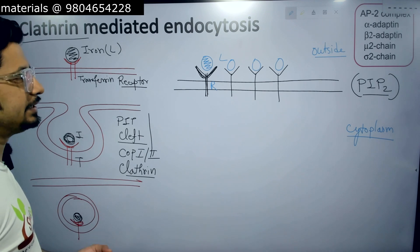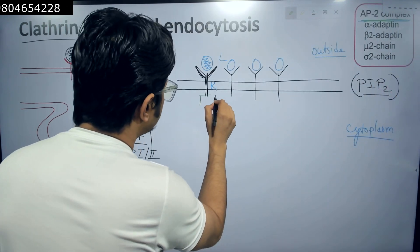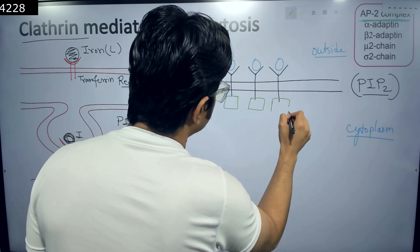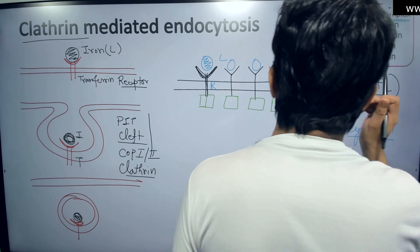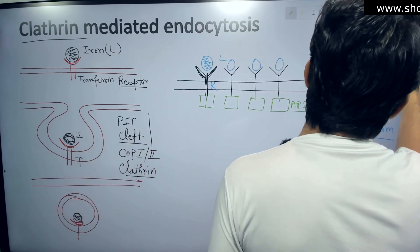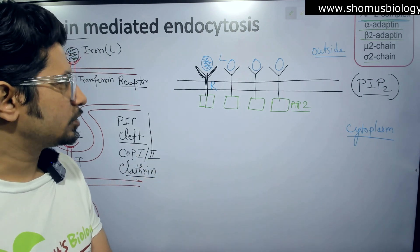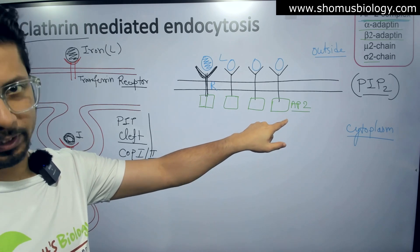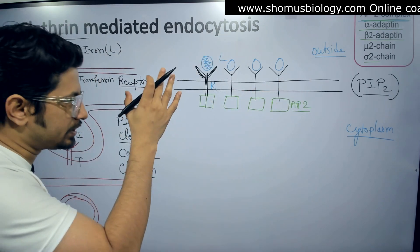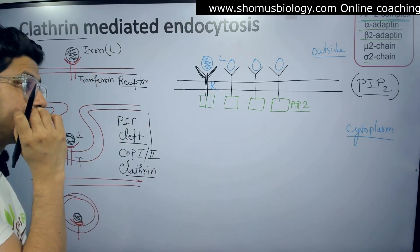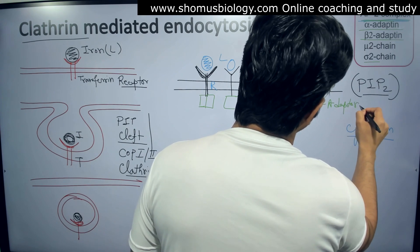After ligand binding, a protein called the AP2 complex binds there on the cytosolic side of the receptor. AP2 stands for adaptor protein 2. The AP2 complex has multiple subunits — alpha adaptin, beta-2 adaptin, sigma-2 adaptin. The job of AP2 is to act as an adaptor, connecting the receptor-ligand complex to the clathrin proteins. Clathrin cannot connect directly to the receptor even when the ligand is bound, so AP2 is required as the intermediary.